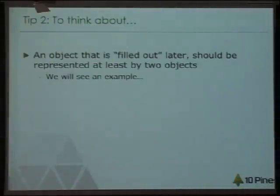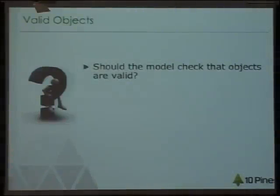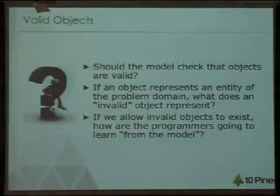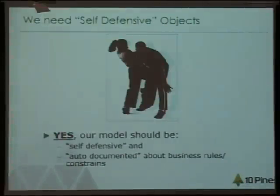So we have objects that are complete, but are they valid? Are they valid objects? Should we check that objects are valid? When I say valid, I mean that they represent something of the problem domain. If you think an object is a representation of an entity of the problem domain, what does an invalid object represent? My answer is: we shouldn't have invalid objects. I think objects should be self-defensive — they should keep you from making mistakes when you want to use or create them.